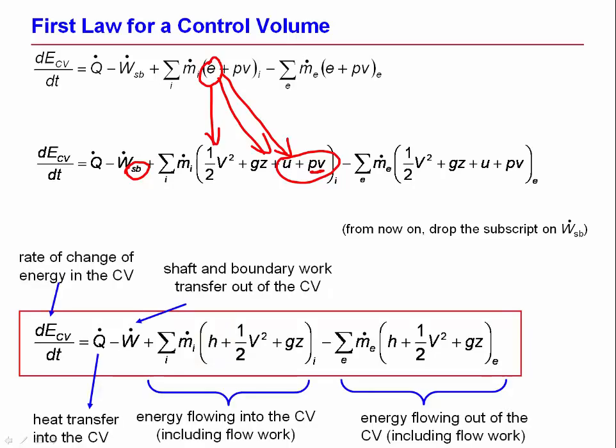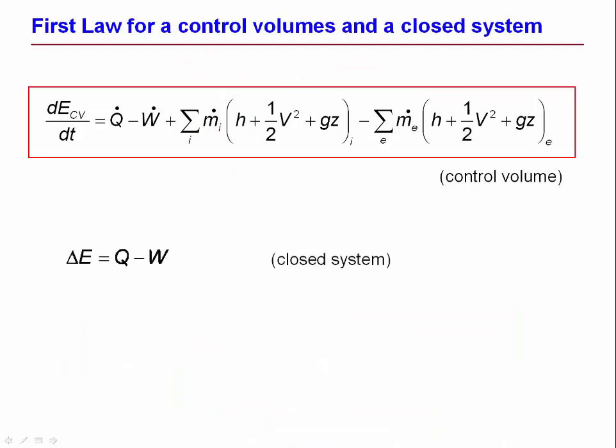The final thing I'd like to do is compare that control volume equation to the equation for a closed system. We're used to seeing the closed system equation like this. It says that the change in stored energy in a system during some process is equal to heat transferred to the system minus work done by the system. We can write that in a rate form as well. We can write dE/dt is Q̇ minus Ẇ. This is saying that instantaneously the rate of change of energy in a closed system is heat rate minus work rate.